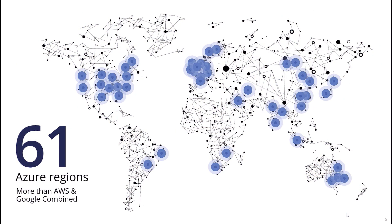Moving on from data centers, it helps to look at the regions available to you — this is where Microsoft puts those Azure data centers. There are currently 61 regions at time of recording, more than AWS and Google combined, so pretty impressive how well they've scaled out. A key thing is you can deploy workloads all across the globe with no real restrictions unless you choose to impose them. Regions are also paired, which is how Microsoft does maintenance — one region first, then the paired region — and this supports disaster recovery and business continuity. You can deploy workloads in East US with your recovery region on the West Coast, for example.